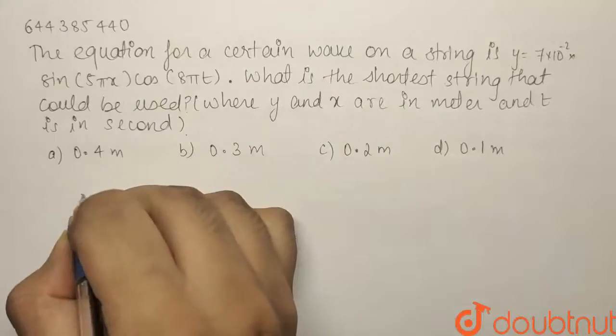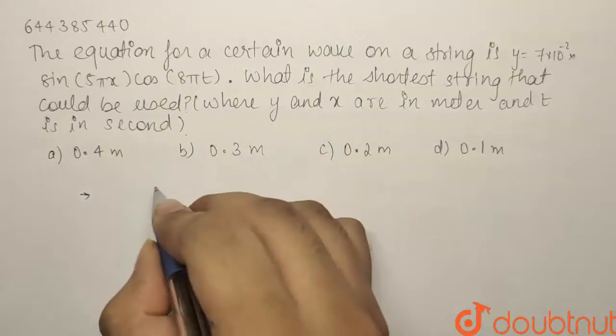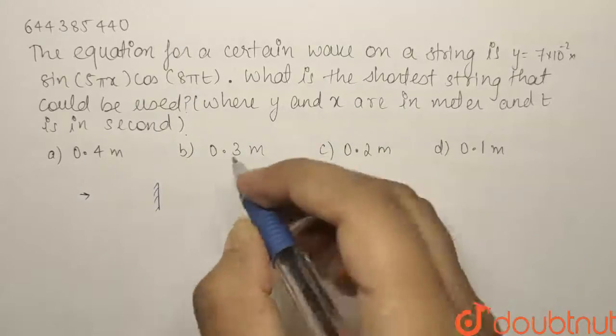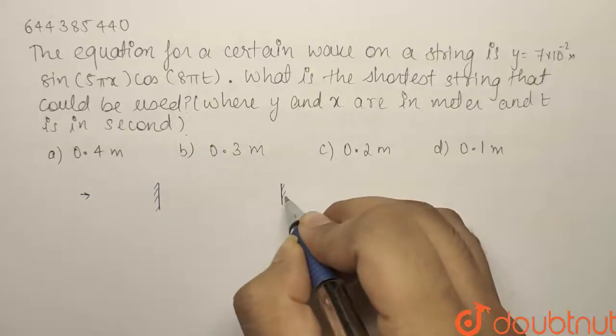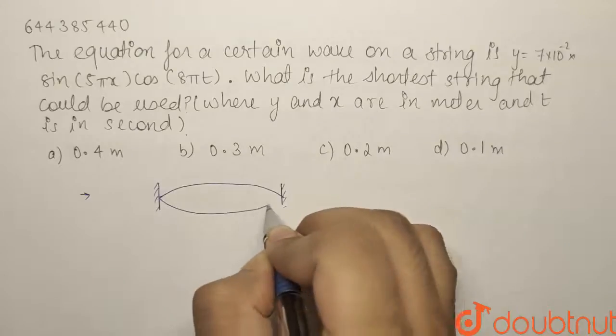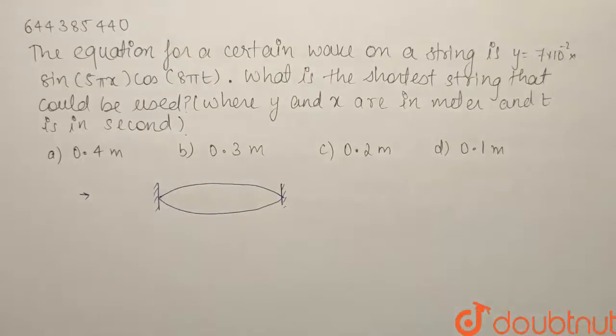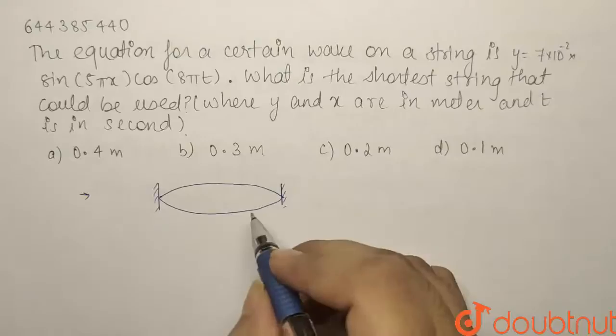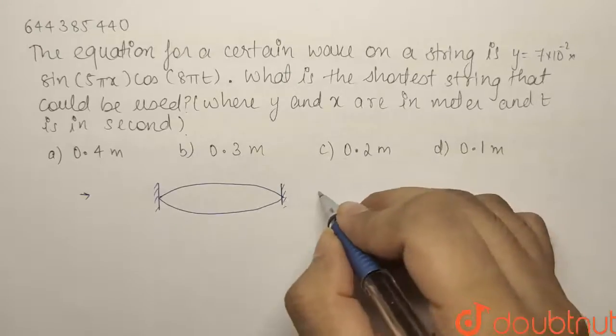We've been given that this is a wave on a string. To find the smallest length of the string, at least one loop has to be present for it to be called a standing wave. What does this one loop mean?